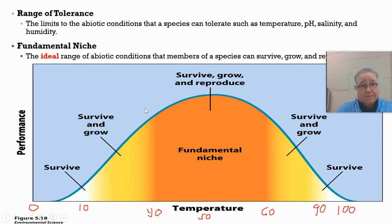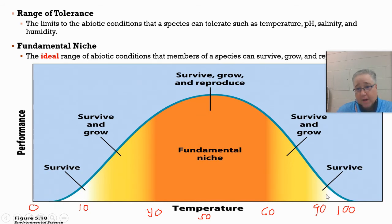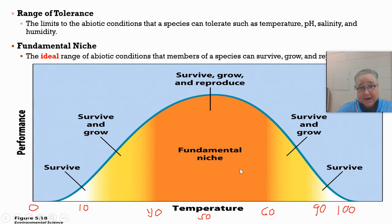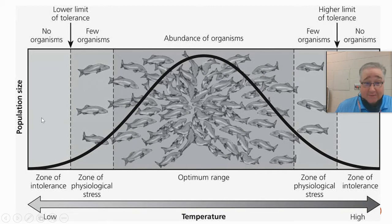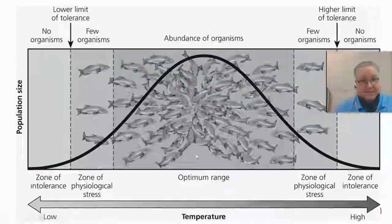The range of tolerance is a key definition to understand, along with the term fundamental niche. This organism — a fish or a bird — can operate from maybe around 5 degrees all the way up to about 100 degrees. Anything outside of that, it can't survive. The tolerance range is anywhere within this curve. The fundamental niche is the area in the middle — the optimal range. Outside of that, organisms start to become stressed, and further out is what we call the zone of intolerance, where very few organisms can survive, if any.